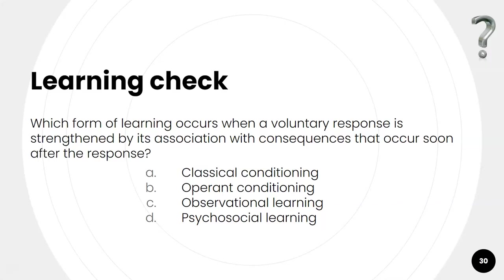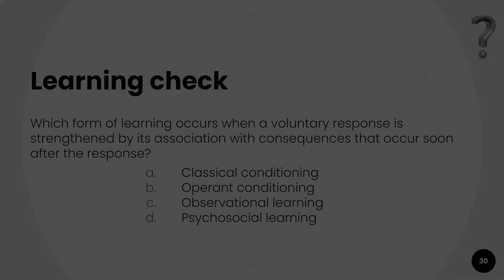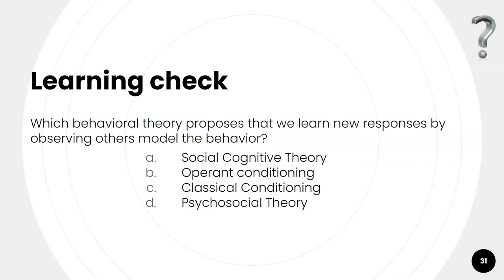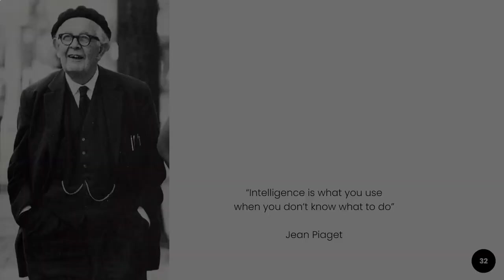Quick checks: which form of learning occurs when a voluntary response is strengthened by its association with consequences that occur soon after the response? That would be operant conditioning. Which behavioral theory proposes that we learn new responses by observing others model that behavior? Social cognitive theory, by Albert Bandura.